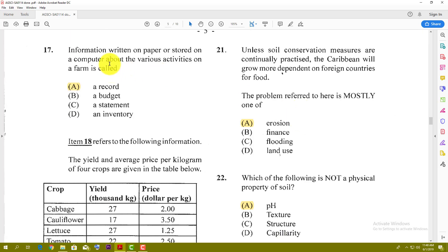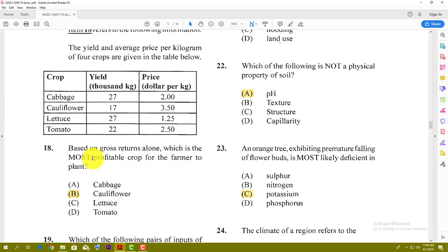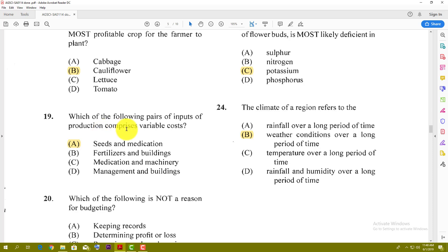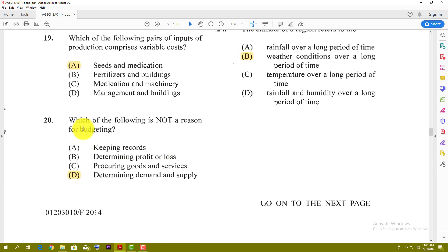Number 17: Information written on a paper or stored on a computer about various activities on a farm is called a record. Number 18: Based on the gross returns alone, which is the most profitable crop for the farmer to plant? Based on the diagram here, the most profitable one seems to be cauliflower. Selling it at a higher price, although your yields tend to be lower, the margins are wider for the cauliflower. Number 19: Which of the following pairs of inputs of production comprises variable costs? The best answer here is seeds and medication because these change during production. Number 20: Which of the following is not a reason for budgeting? The best answer here is determining demand and supply.